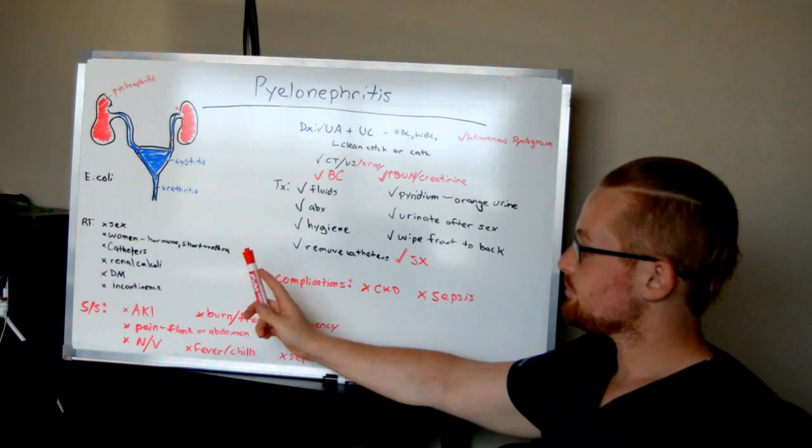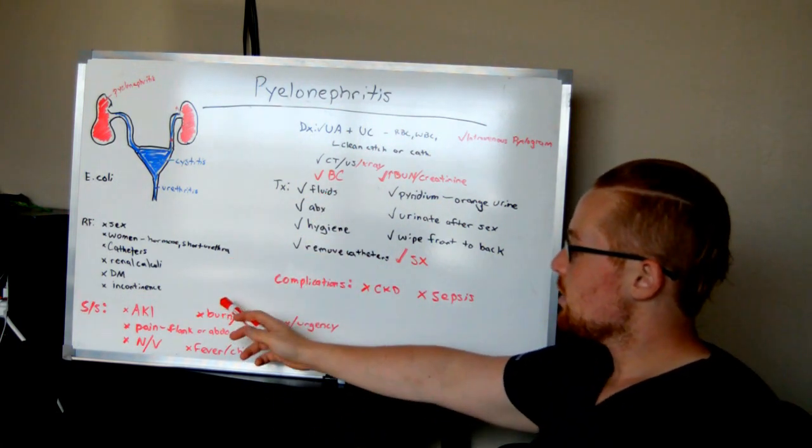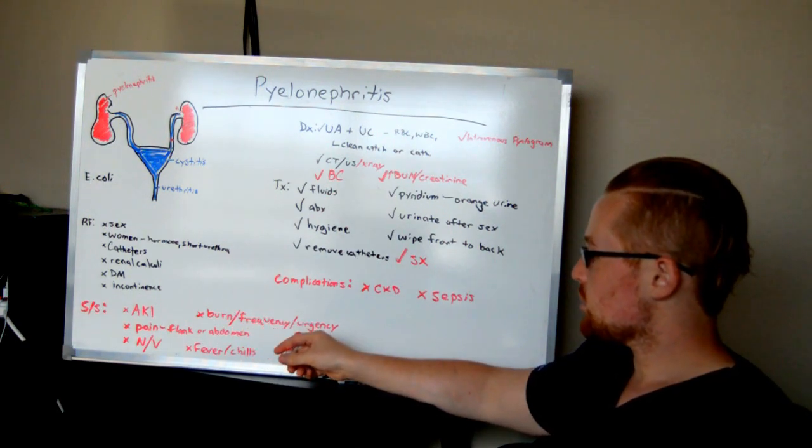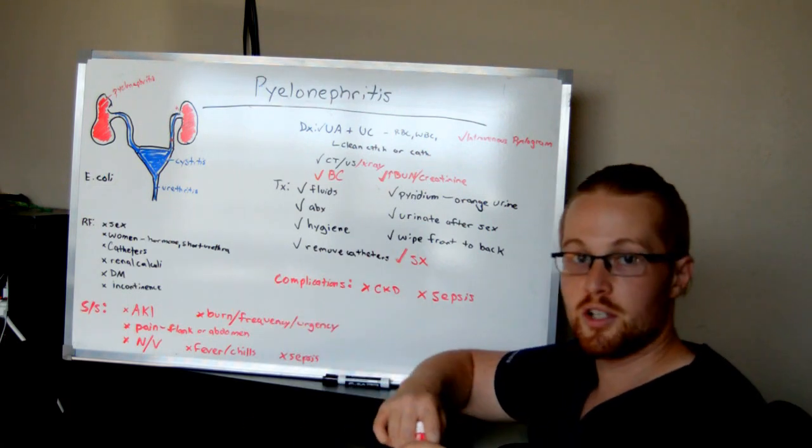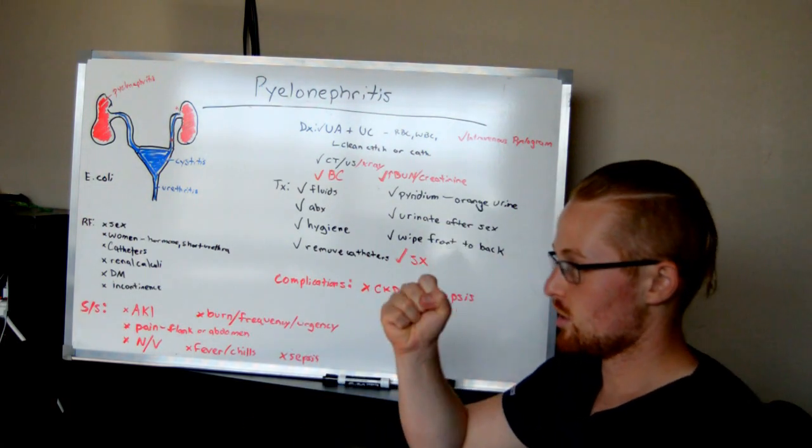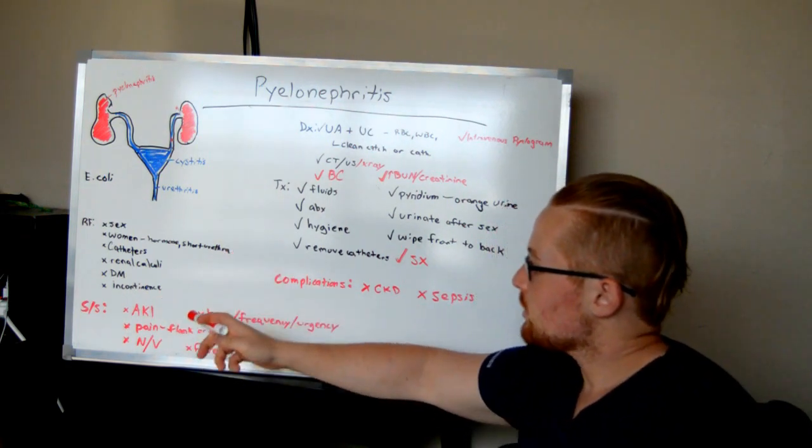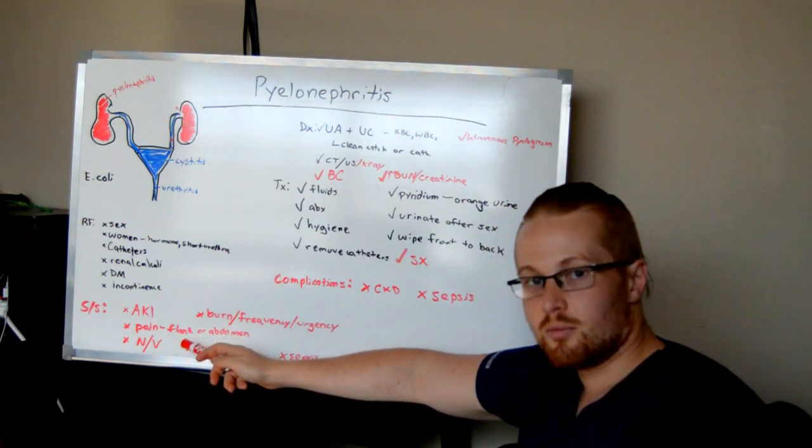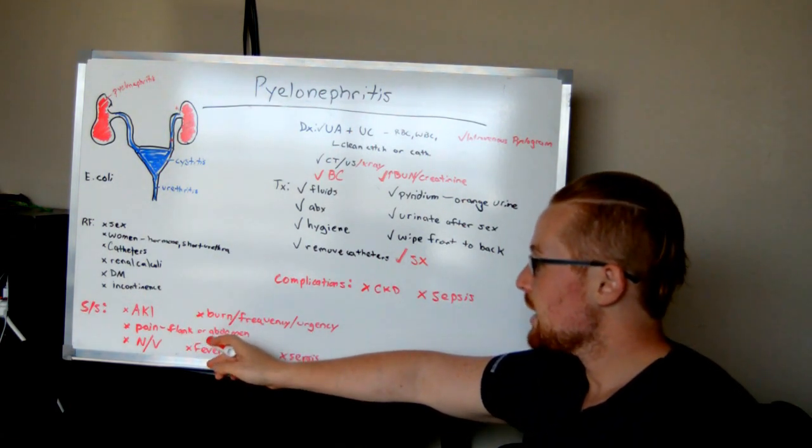When you have pyelonephritis, symptoms include burning with urination, frequency, and urgency. Frequency means you're going more than normal; urgency is when you've got to go right now—it's a sudden urge. You're still going to have discomfort and tenderness, but this could be more flank pain or abdominal pain.